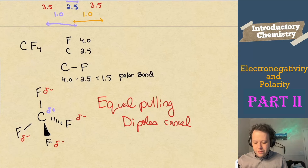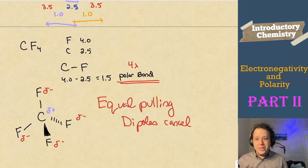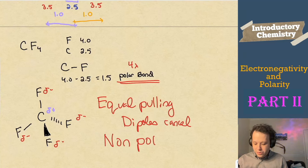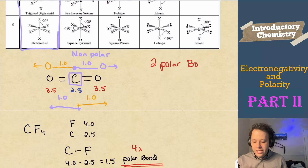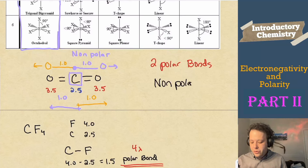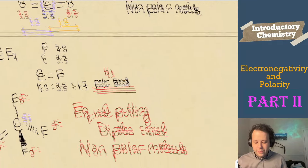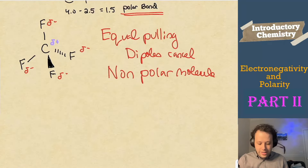CF₄ has four polar bonds but is a non-polar molecule because the tug of war cancels out. Just like CO₂ above — it has two polar C=O bonds, there's no denying that, but it is a non-polar molecule due to its geometry.